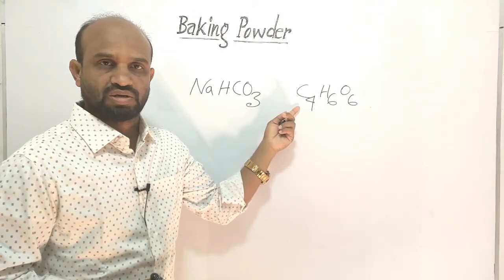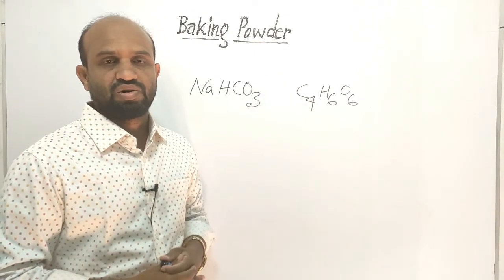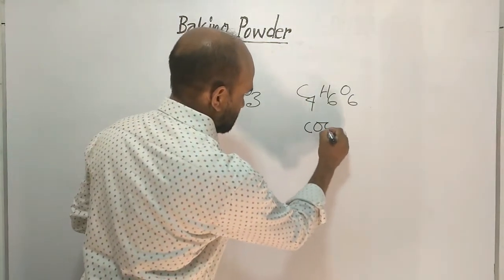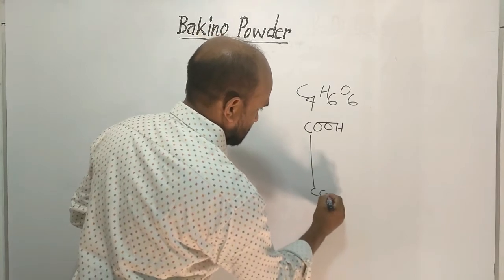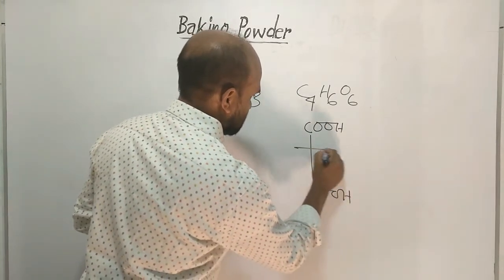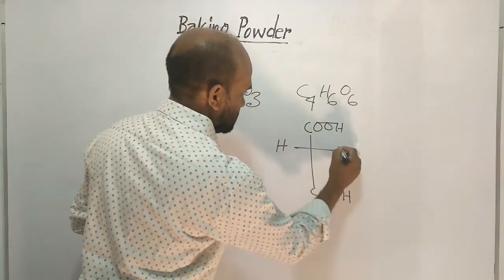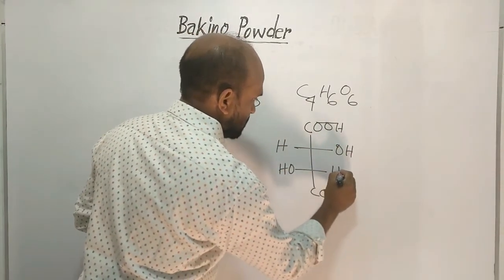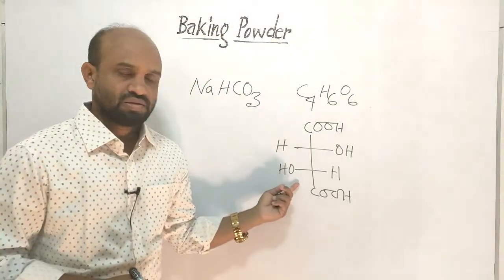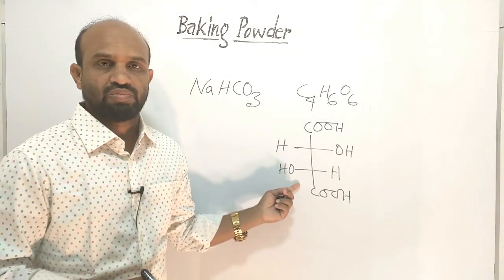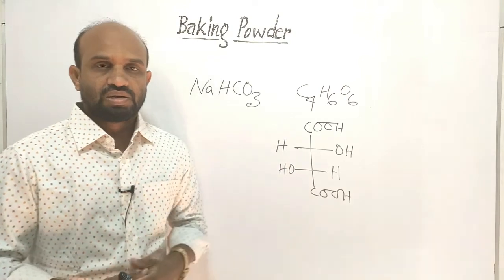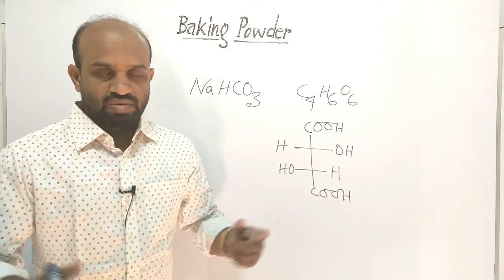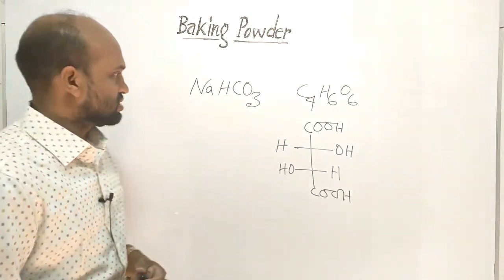Now let's see the structure formula of tartaric acid: C-O-H, C-O-H, H-O-H. This is the structure formula of tartaric acid. Now let's see what baking powder is.